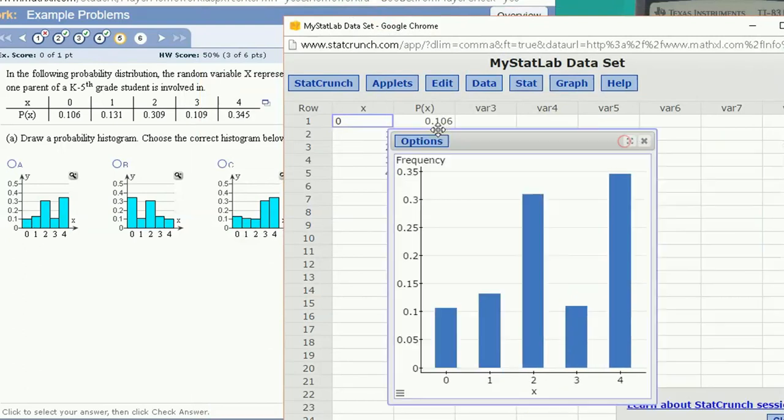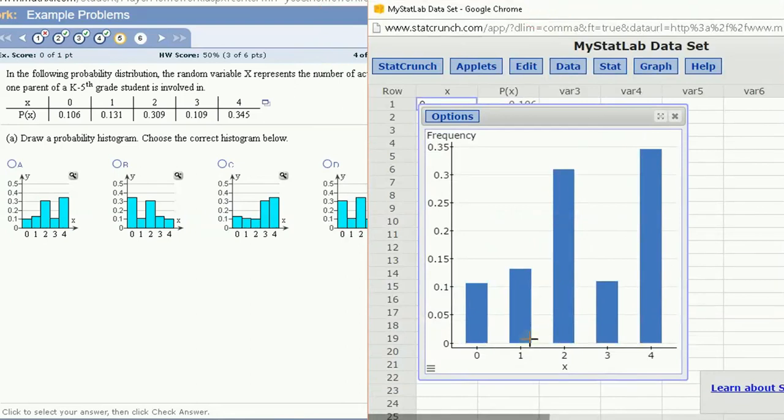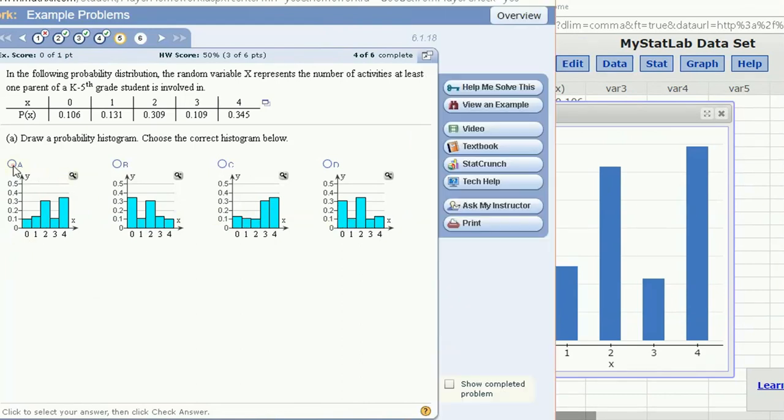Now, bar chart's not exactly the same as a histogram, but we can't really compare, we can't make the bars wider, but we can choose which of these matches. And you can clearly see it's this first one.